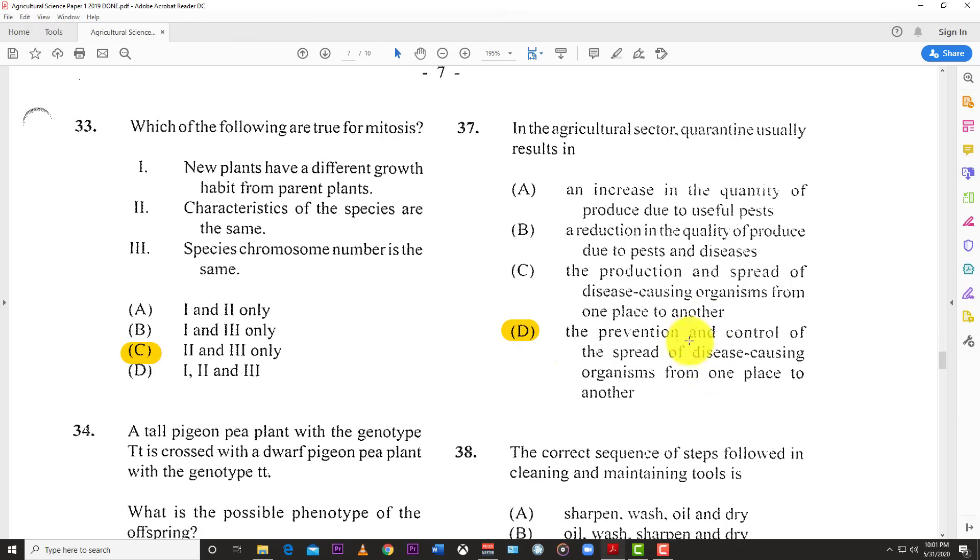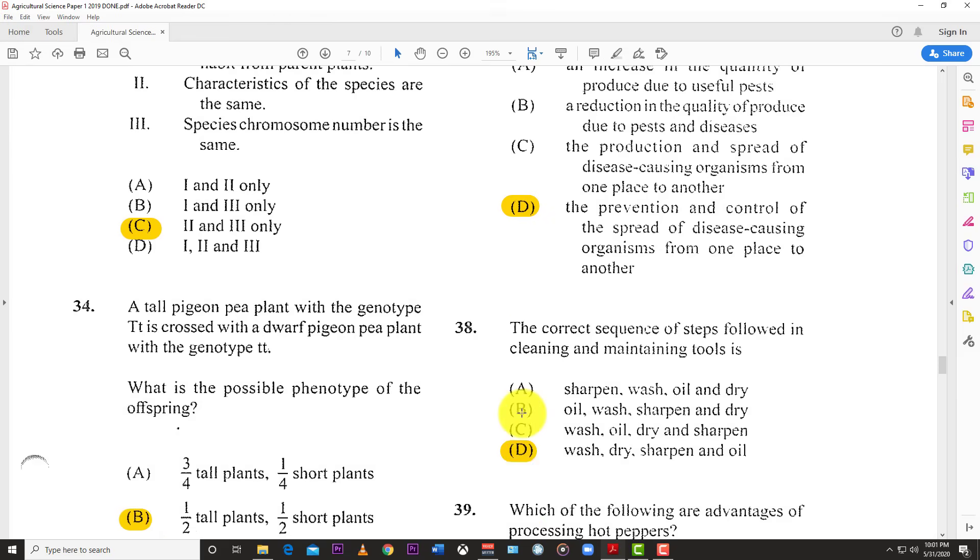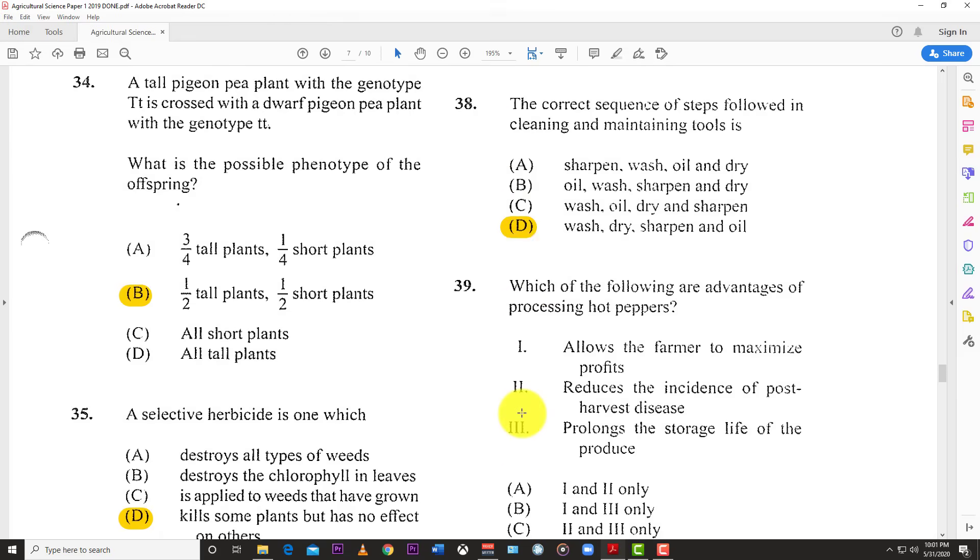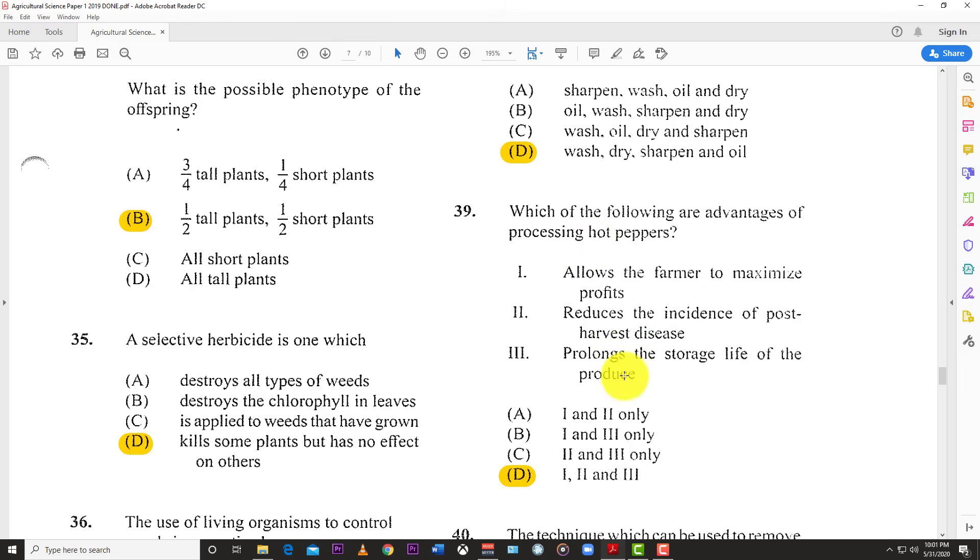Number 36: The use of living organisms to control weeds is a practice known as biological control. Number 37: The agricultural sector quarantine usually results in the prevention and control of the spread of disease-causing organisms from one place to another. When you import stuff from overseas, sometimes it gets quarantined.